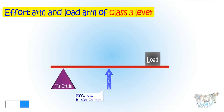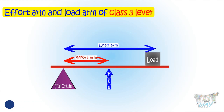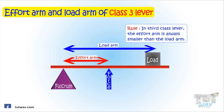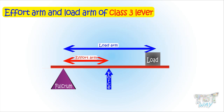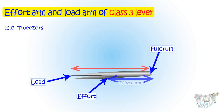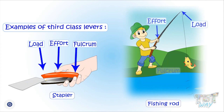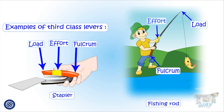Now let's learn about class 3 levers, where effort is in the center. The effort arm is the distance between the effort and the fulcrum, and the load arm is the distance between the load and the fulcrum. Since effort is in the center, in every case the effort arm is going to be smaller than the load arm. Therefore, a larger effort is required to do a very small amount of work. This type of lever is used for very light jobs — like tweezers — where the effort arm is much smaller than the load arm.